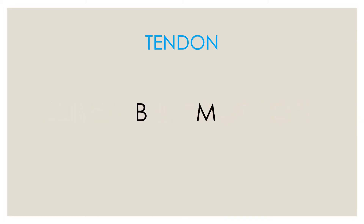I wanted to share a cool way in which you can learn this association. Here B stands for bone and M stands for muscle, and T stands for tendon. A bone is joined to a muscle with the help of a tendon, marked by the letter T. To remember this association, you can turn it into the word BOTTOM. So tendon is a connective tissue that joins a bone to a muscle.